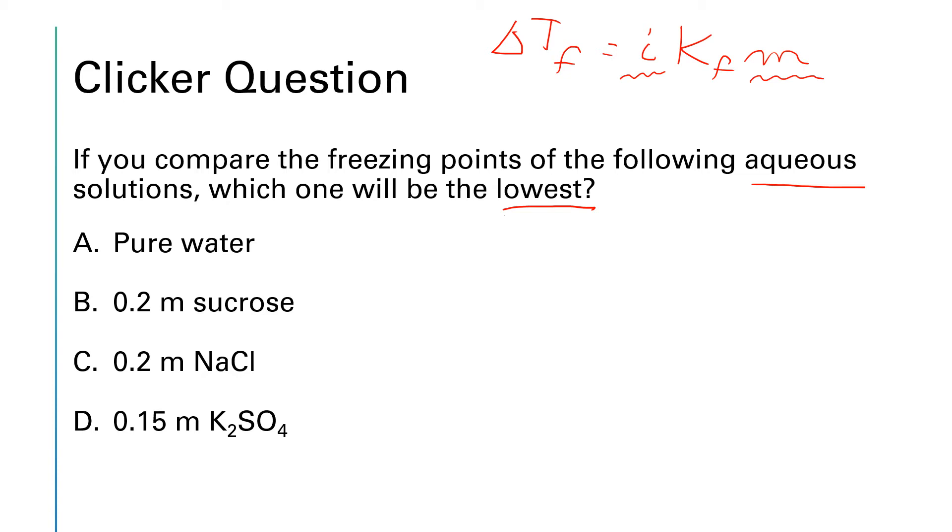Well, for pure water, that's going to be zero degrees C for its freezing point and all of the solutions are going to have lower ones. So it can't possibly be pure water. So that's just three that we have to consider. So i times m is what we need to calculate for these three.